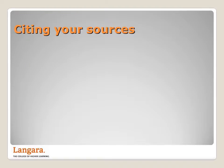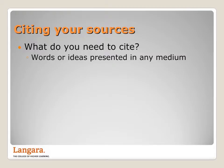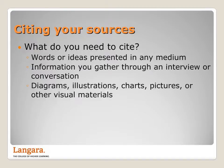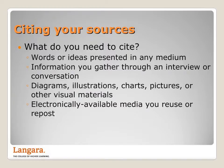In terms of types of information, what do you need to cite? Words or ideas presented in print, online, or on-screen. Information you gather through an interview or conversation with another person. Diagrams, illustrations, charts, pictures, or other visual materials you reprint. Electronically available media you reuse or repost, including images, audio, and video. Course material, including information covered by your instructors in lectures.